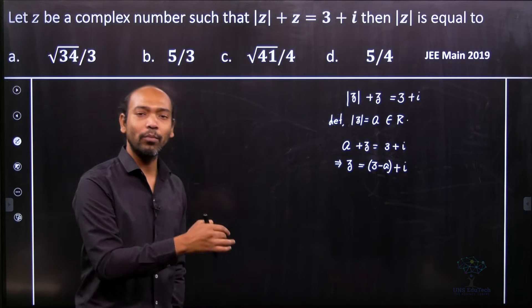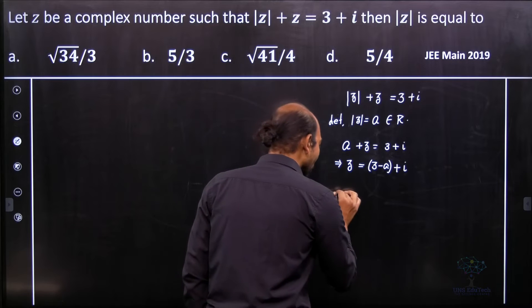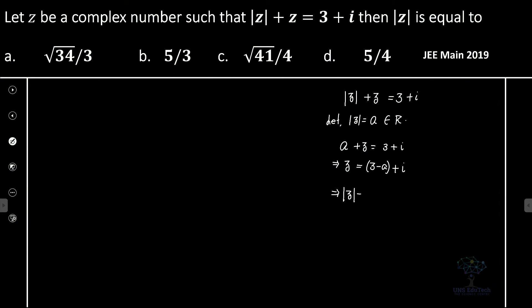Now we can take the modulus again. What is mod z here? Therefore, mod z is equal to square root of (3 minus a) whole square plus one square.